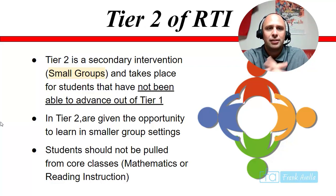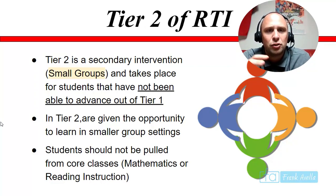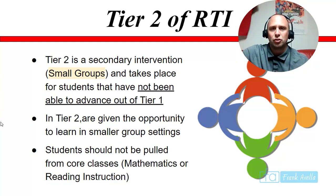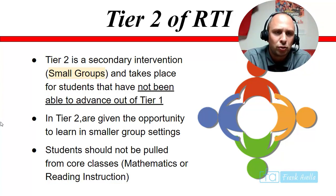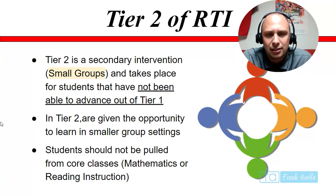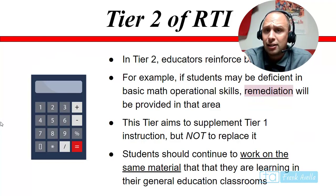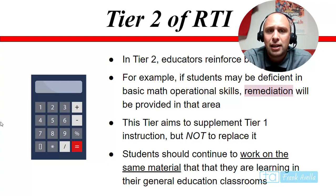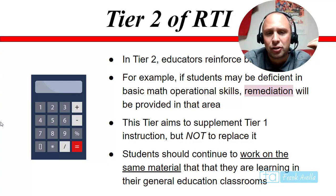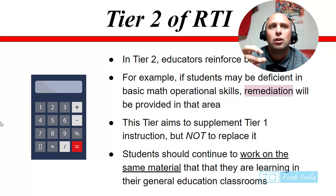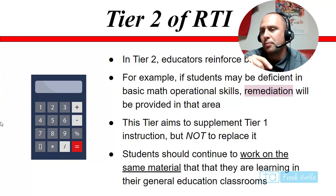Tier two is small group instruction, and it takes place for students who have not been able to advance in tier one — students only move to tier two if tier one supports aren't working. In tier two, students are given the opportunity to learn in smaller group settings, and they should not be pulled from core classes like mathematics or reading. Educators reinforce basic concepts, and if a student is deficient in math, operational skills remediation can be applied. Tier two aims to supplement tier one instruction, not replace it — students continue working on the same material from the general education classroom but in small groups, perhaps with a math coach.